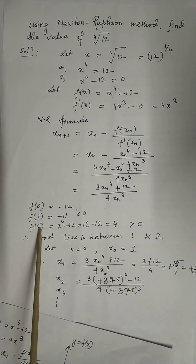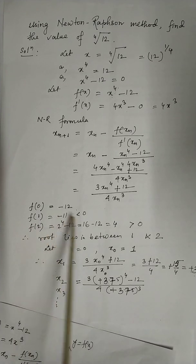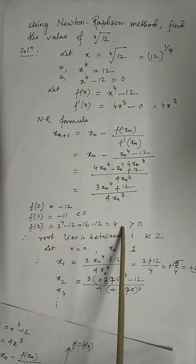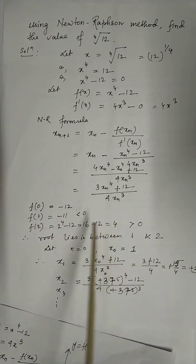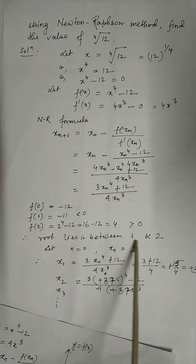So at 1 and at 2, functional values are of opposite signs. So according to that theorem, there is a root lying between 1 and 2.